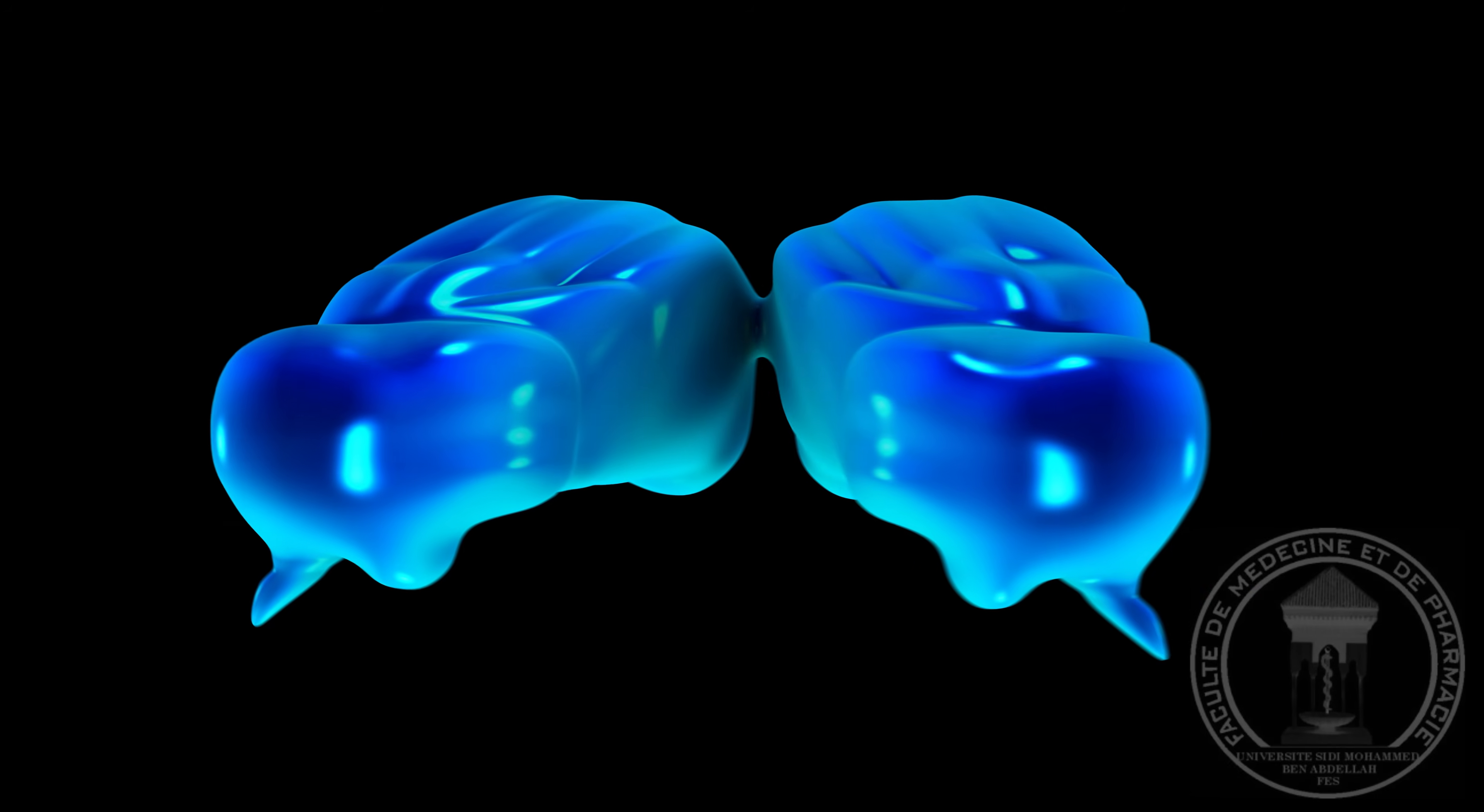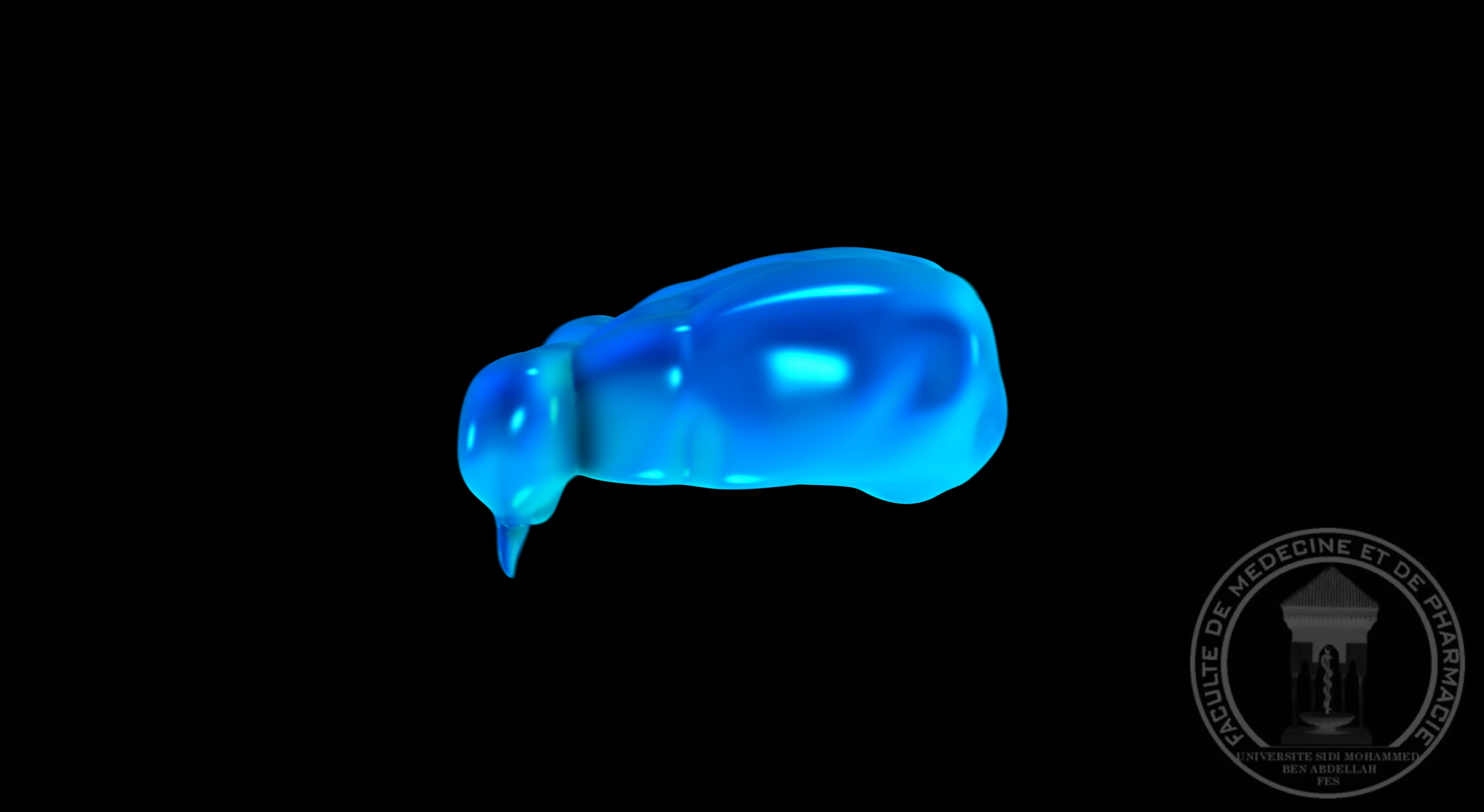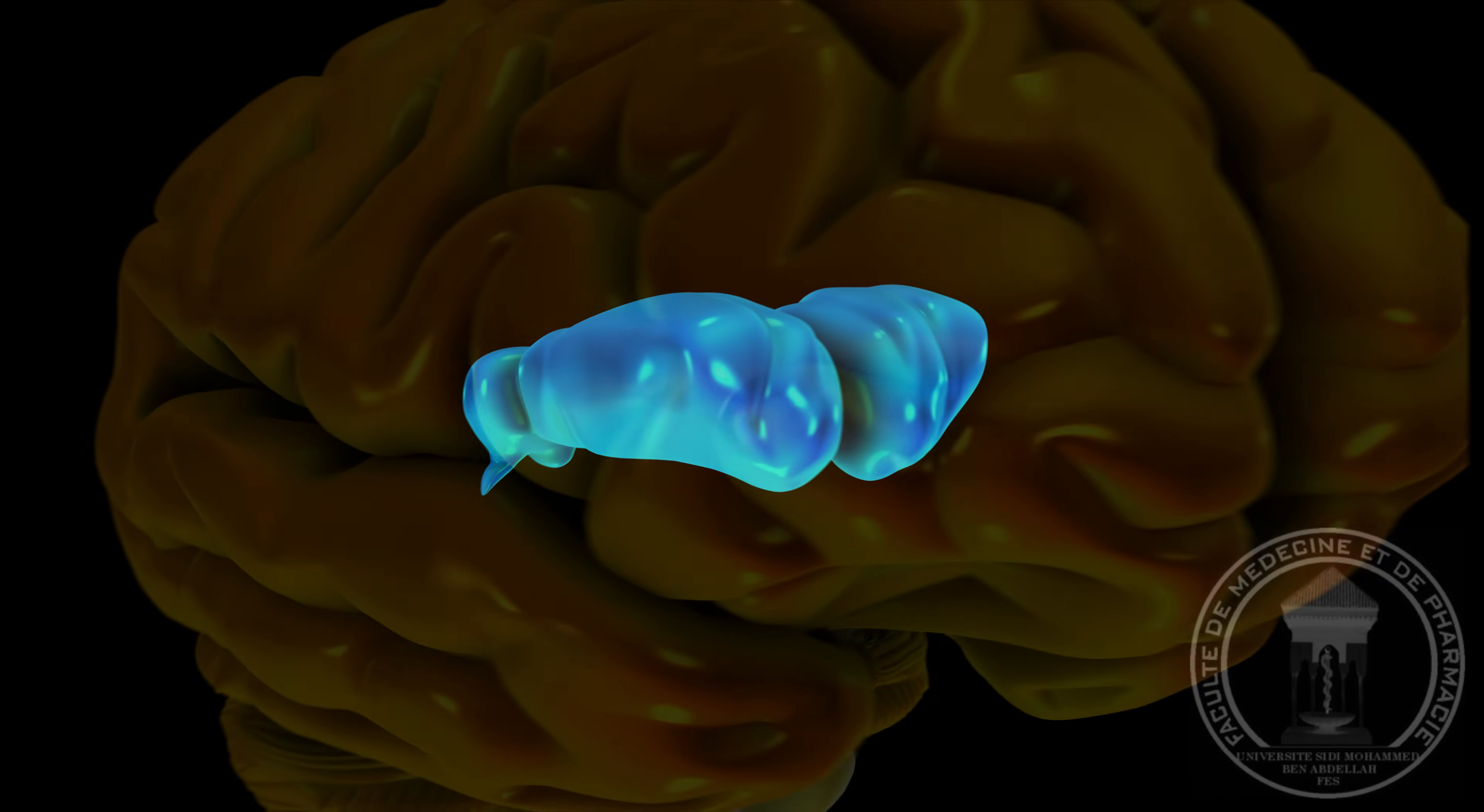Le thalamus se constitue de deux masses de substances grises, droites et gauches, prenant chacune une forme ovoïde.